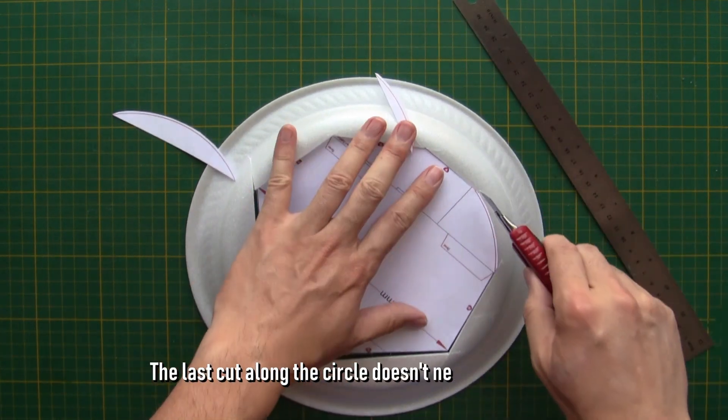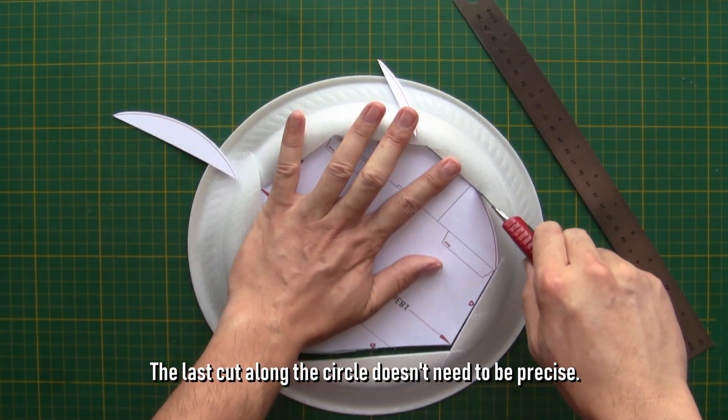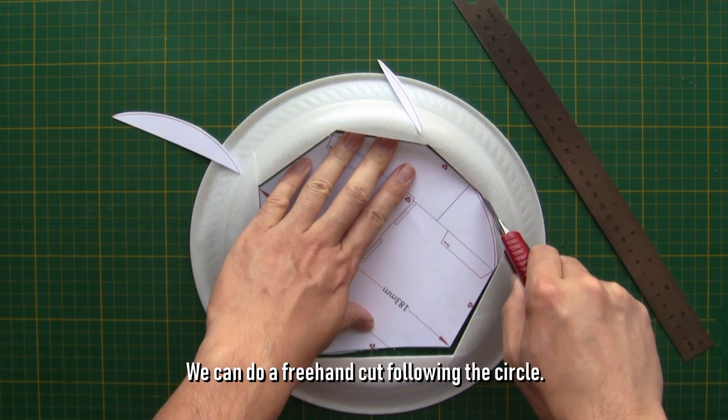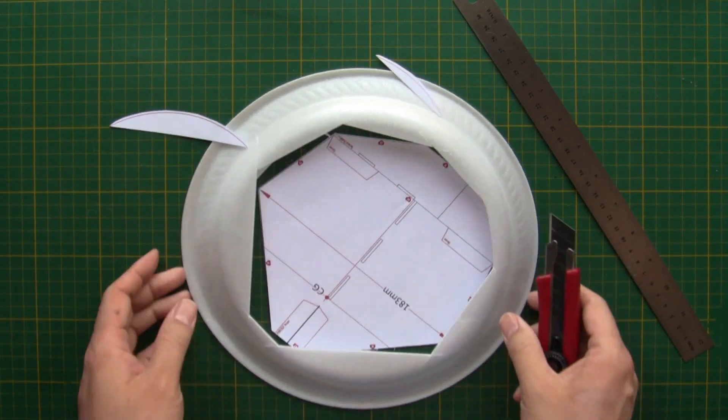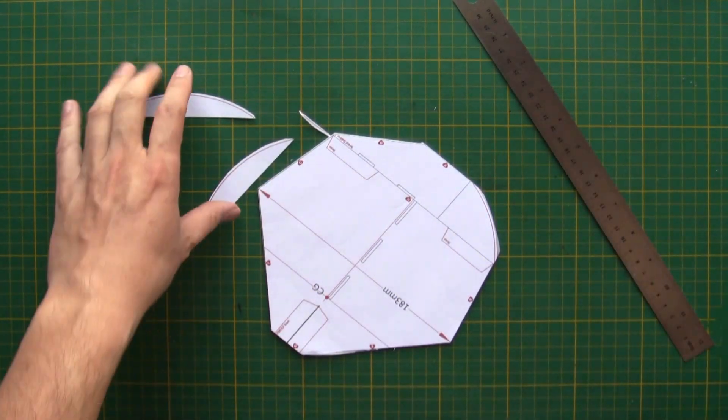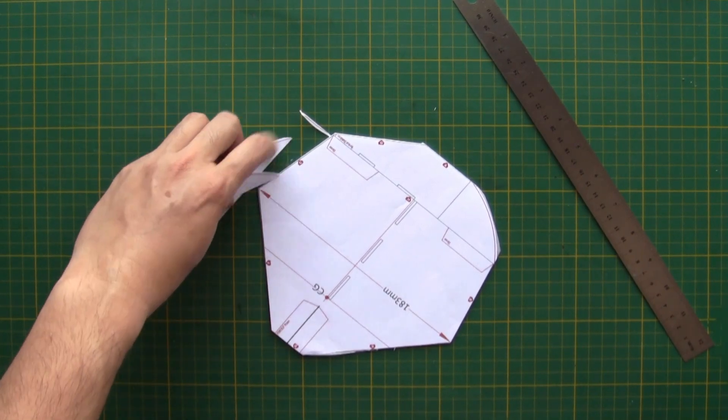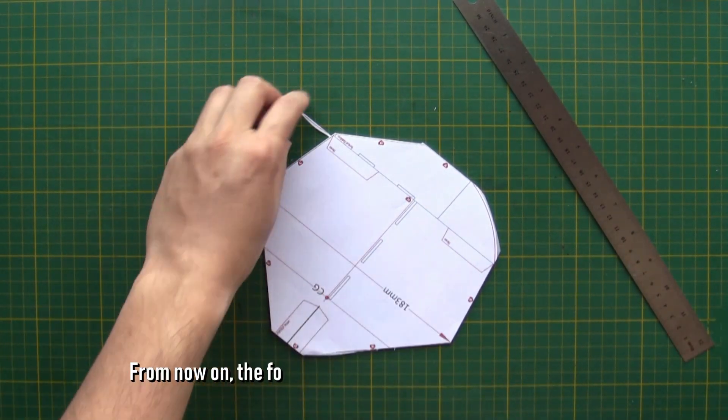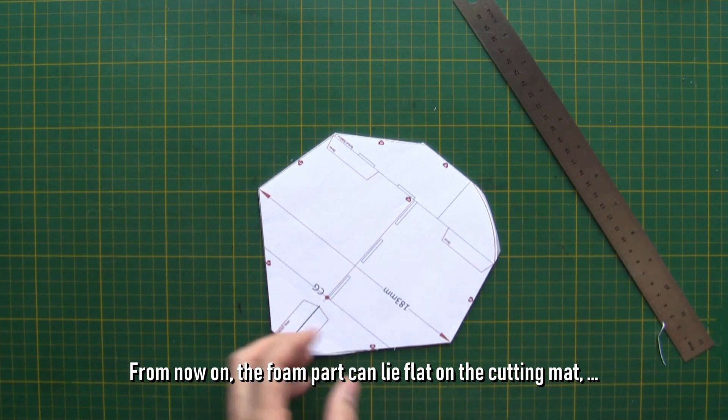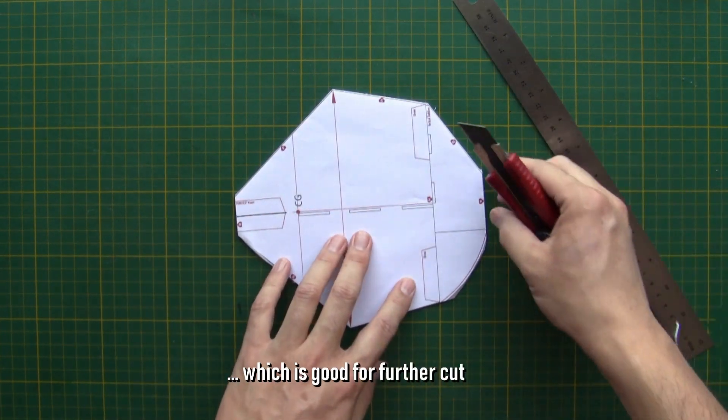The last cut along the circle doesn't need to be precise. We can do a freehand cut following the circle. From now on, the foam part can lie flat on the cutting mat, which is good for further cutting.